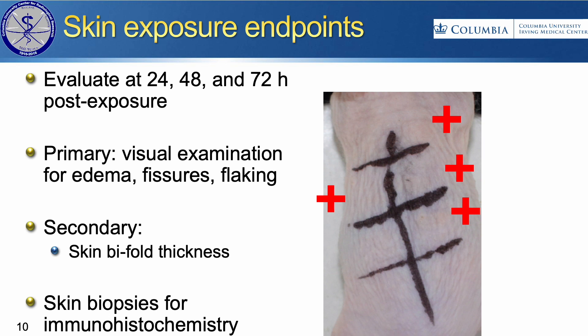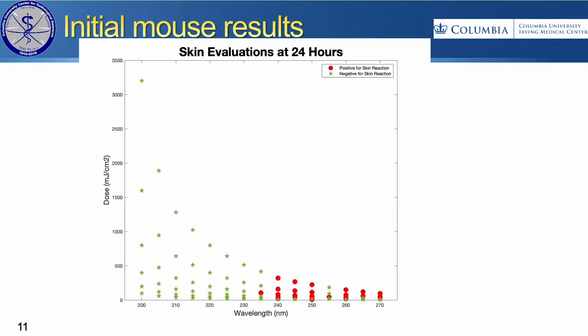This is an example of how we evaluate the mouse skin. It's really tough to see in a picture, but this would be positive in four different spaces. We evaluated at 24, 48, and 72 hours post-exposure. The primary endpoint was a visual examination of edema and fissuring and flaking. We're also taking skin bifold measurements to measure edema more precisely, and later we'll take biopsies after the 72-hour point for histochemical analysis.